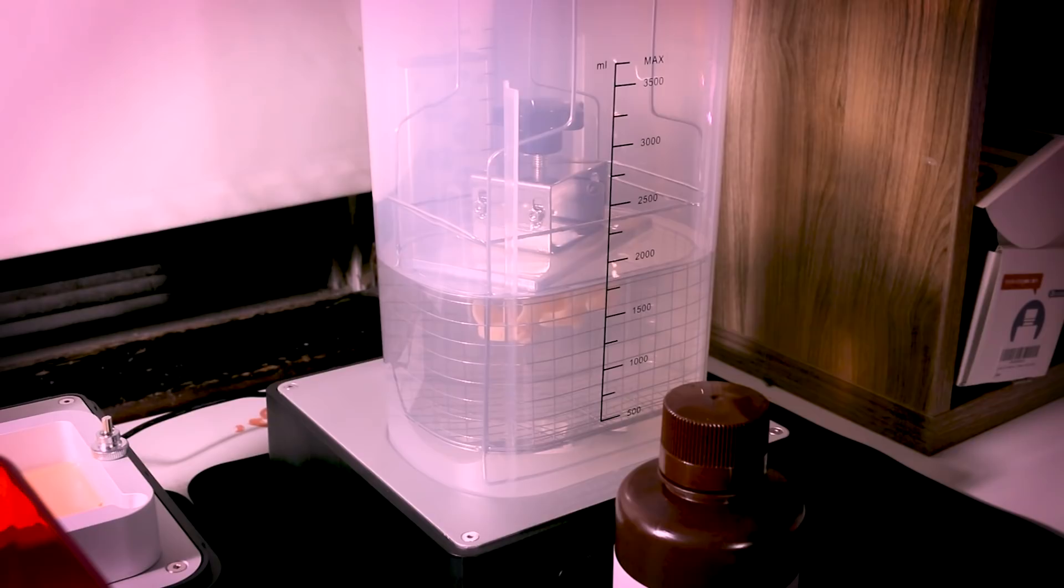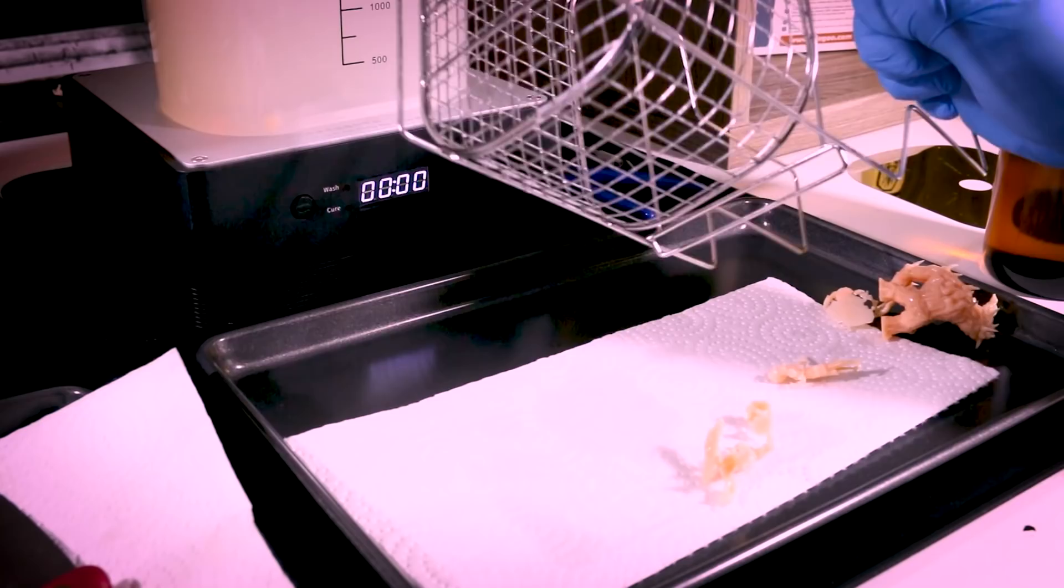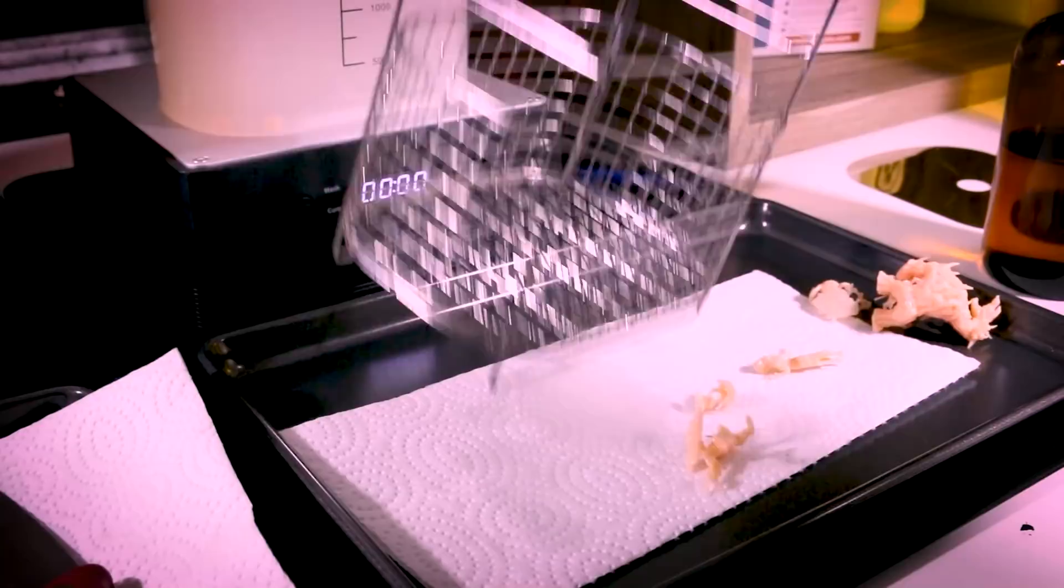Now another option would be we could just stick the build plate directly into the washing machine first and wash everything and then remove the supports. I'm not sure which I like better, but both are options I've been toying around with. In either case, once our supports are removed and we've removed the models from the wash, we're going to want to let them sit and dry for a little bit before curing, letting the alcohol evaporate from the models.